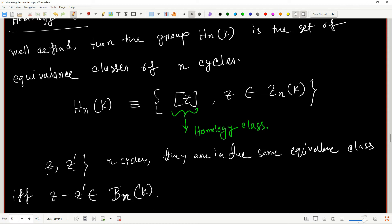In which case, this Z is said to be homologous with this Z prime. So if this is true, we say Z is homologous to Z prime and we denote them like this. Z homologous to Z prime because it's also an equivalence relation.